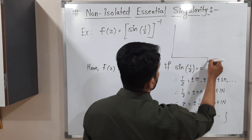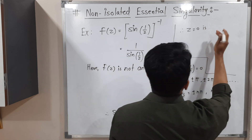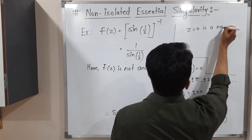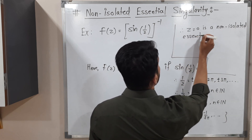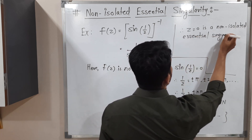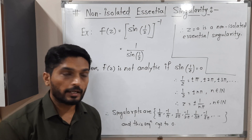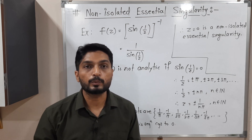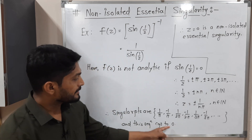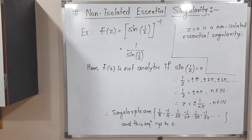Therefore, z = 0 is a non-isolated essential singularity. We found the points where the function is not analytic — the singular points — and got a sequence moving towards 0. All these points are moving towards 0, so that is why 0 is the non-isolated essential singularity. In this way we have completed this concept with one example. Make a screenshot of it. Thank you, see you in the next video.